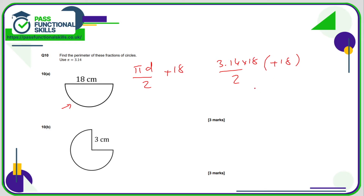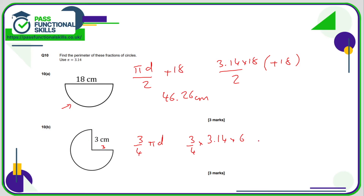That comes to 46.26 centimetres. For B, we've got two straight sides of 3 and three-quarters of a circumference: three-quarters of pi times the diameter. If the radius is 3, the diameter is 6, so it's three-quarters times 3.14 times 6, then add 6. You can type 0.75 or 3 divided by 4. The answer is 20.13 centimetres.